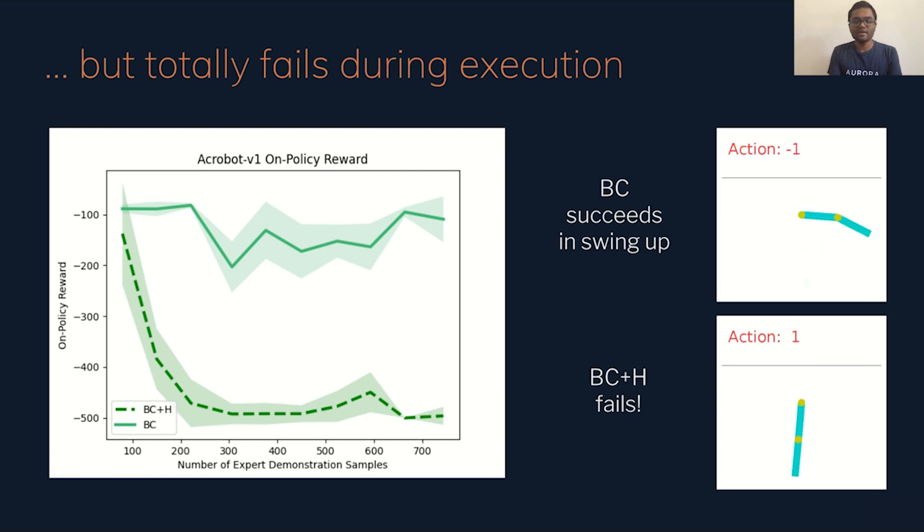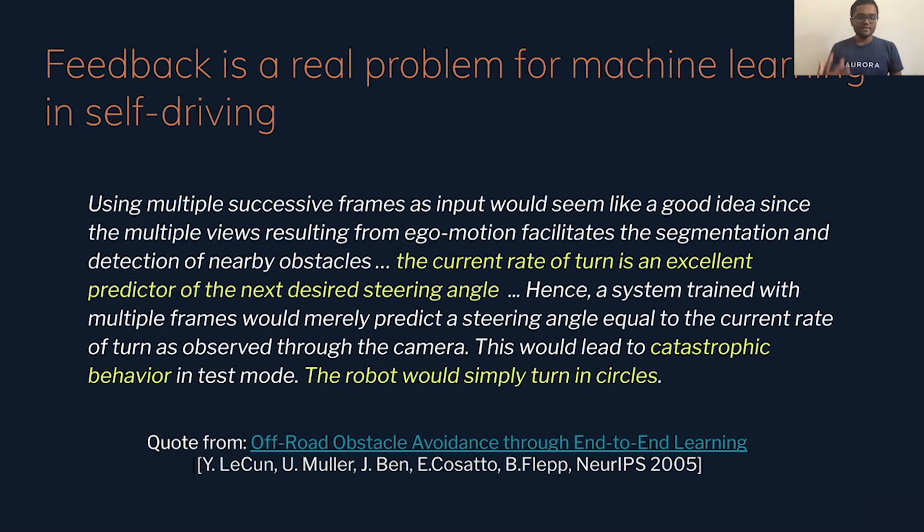But it doesn't really turn out to be doing so well in execution. So on the top, you can see what happens with regular behavior cloning. And in fact, it's not that smooth, perhaps, but it's able to mimic the expert. It's building momentum and then able to swing the tip of the pendulum to the top. But at the bottom, well, adding history in fact makes it worse. Adding the past action makes us get smooth looking behavior, but it's not at all doing the problem that we want to do. So it's not at all acting like the expert.